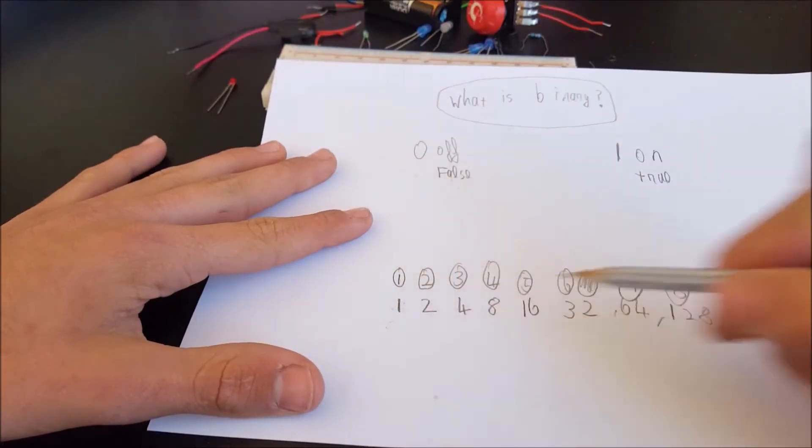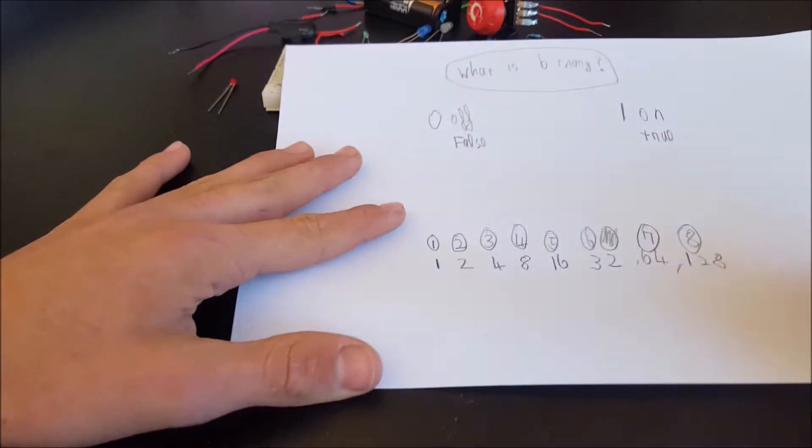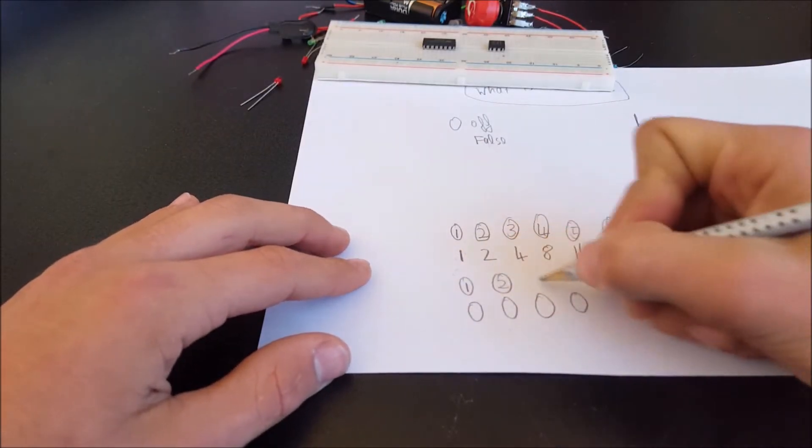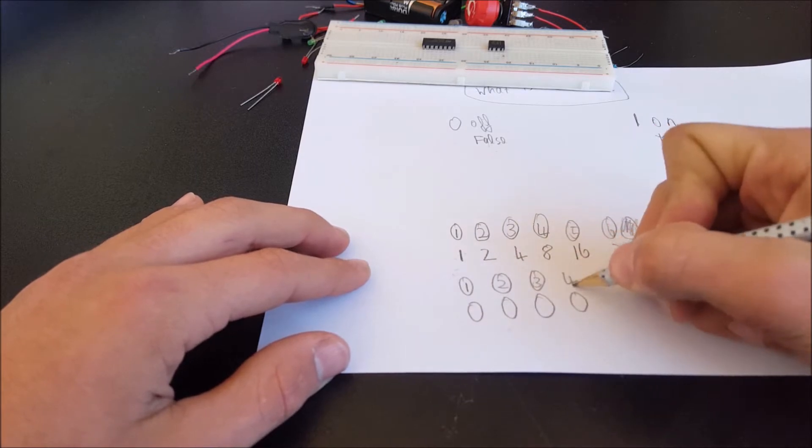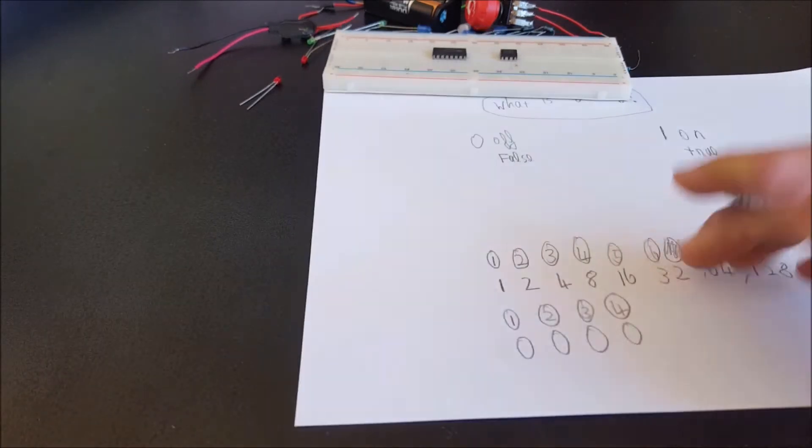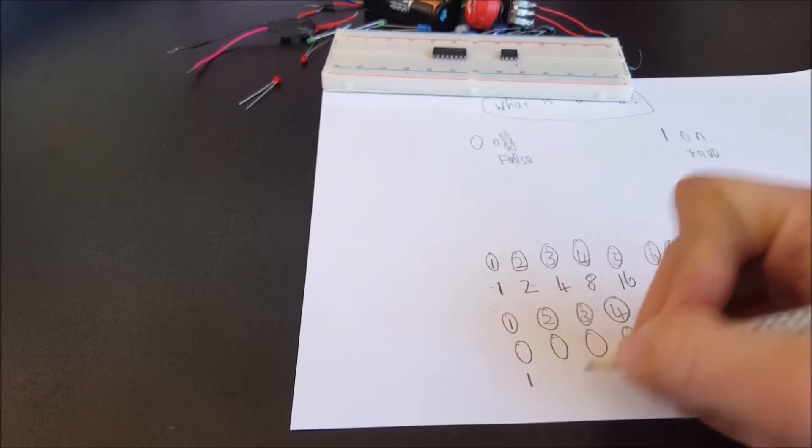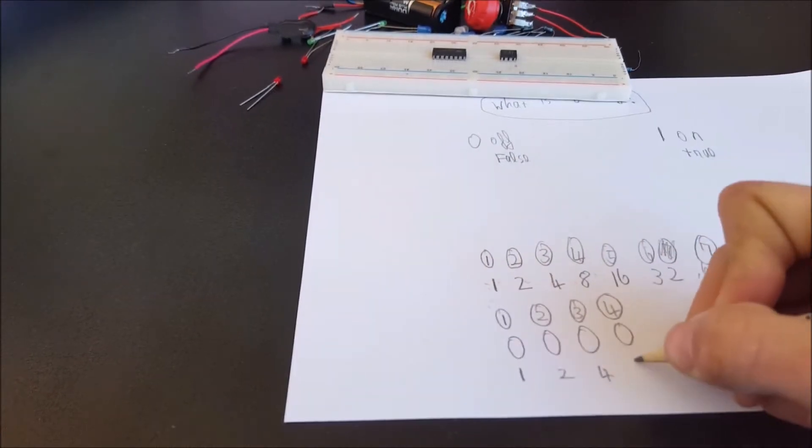So if it counts like this - let's imagine that there are 4 LEDs. We have the 1st bit, the 2nd, the 3rd, and the 4th. And as we said earlier, they go like 1, 2, 4, and 8. So this is 1, this is 2, this is 4, and this is 8.